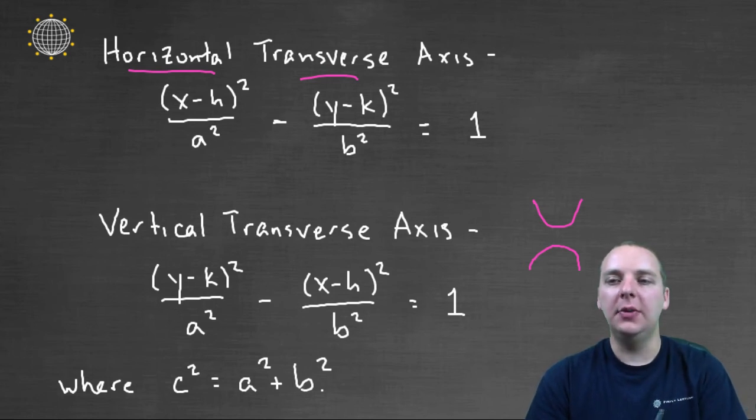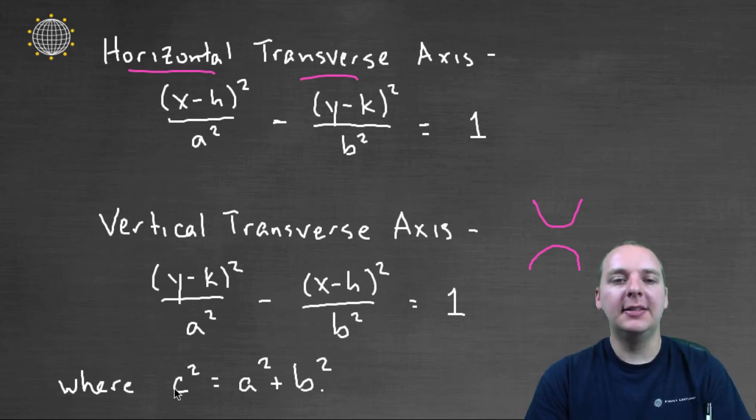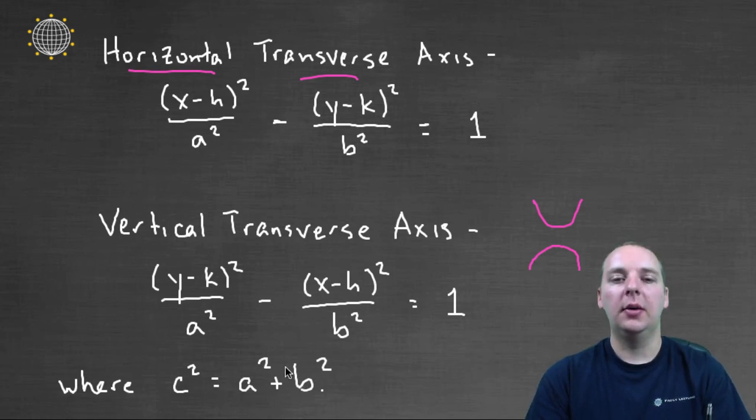And then what's that C? Remember I mentioned something about a C earlier, the distance from the center to the foci, which is obviously important to graphing these guys. The C is related to A and B by the equation C squared equals A squared plus B squared. Now notice there is a difference here to the equation that we had for ellipses. For ellipses it was A squared minus B squared. For hyperbolas it's A squared plus B squared. That's an important distinction that's easy to overlook.